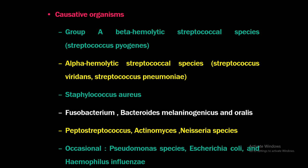The causative organisms: the most common is Group A beta-hemolytic Streptococcus species, as it is a commensal of the oral cavity. Others include alpha-hemolytic Streptococcus species like Streptococcus viridans and Streptococcus pneumoniae, Staphylococcus aureus, Fusobacterium, Bacteroides melaninogenicus, and Bacteroides oralis — all anaerobic bacteria found in the oral cavity. Occasionally, Pseudomonas species, E. coli, and other organisms may also cause Ludwig's angina.